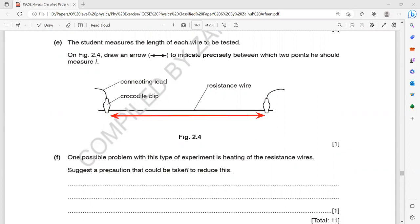One possible problem with this type of experiment is heating of the resistance wire. Usually, this is a common problem with electric circuit questions in which when our electrical devices or appliances become hot when the current is passing. So how we can reduce the heating effect? There are different ways to reduce the heating effect. Number one, we can reduce the supply voltage.